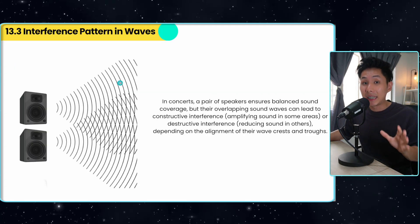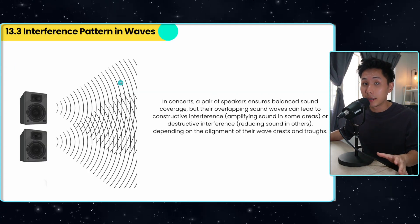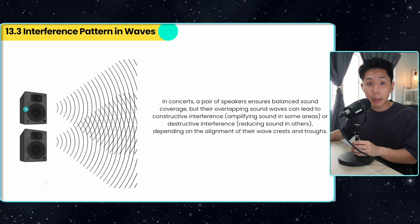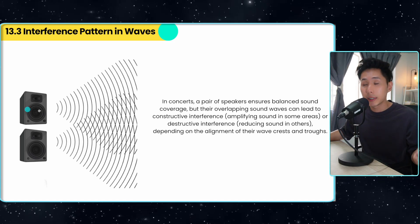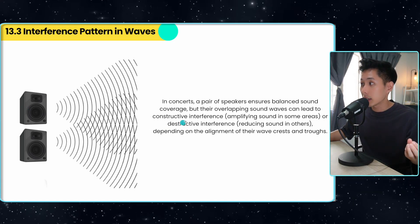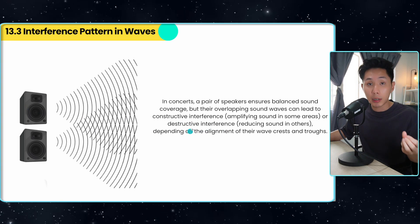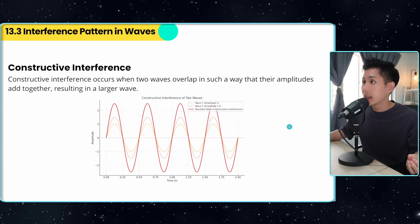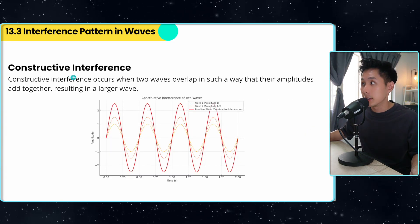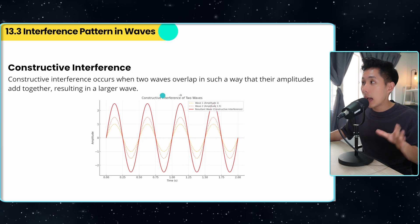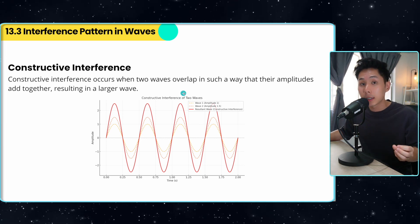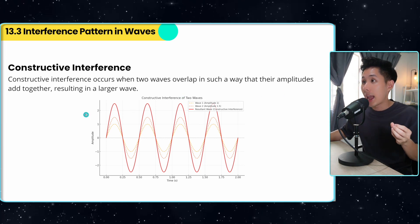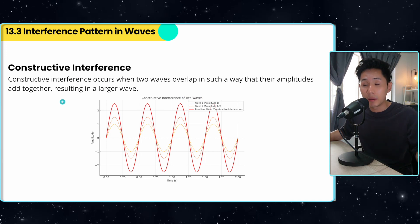Now let's look at the interference patterns in waves. I have two speakers here. There are two types of interference that can be produced: constructive interference and destructive interference. Constructive interference happens when two waves overlap in such a way that their amplitudes add together, resulting in a larger wave.